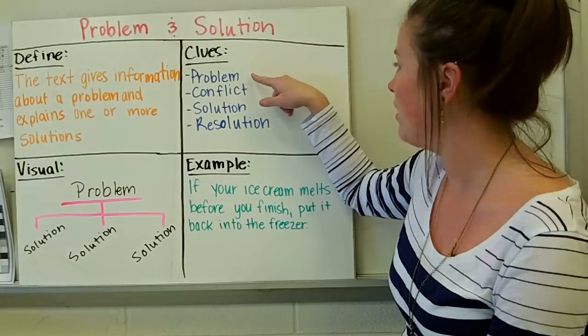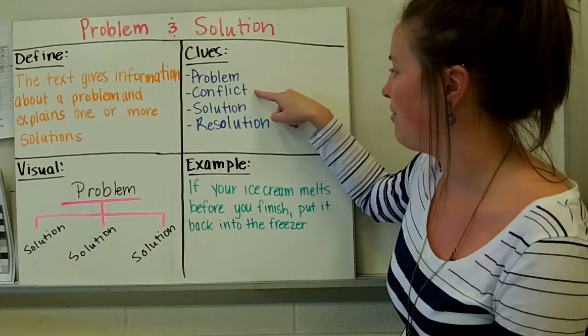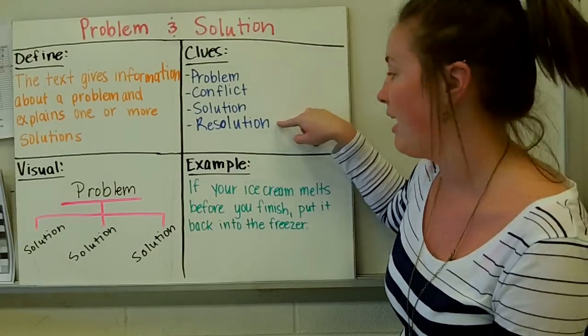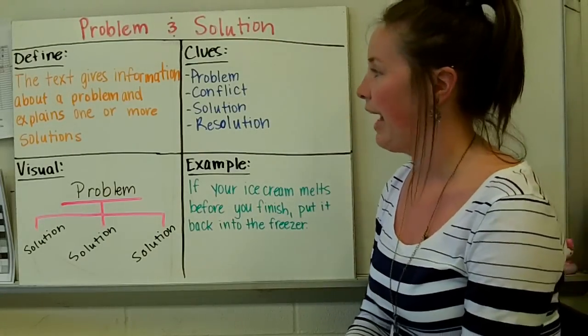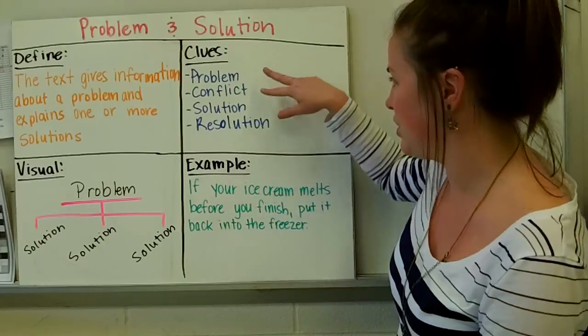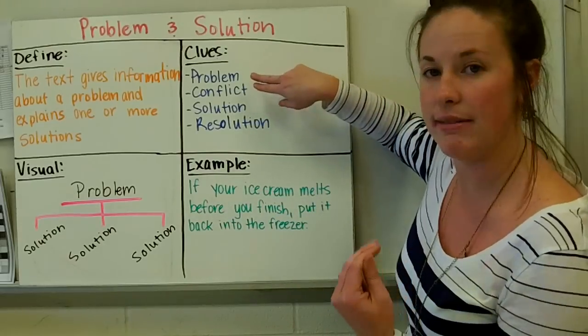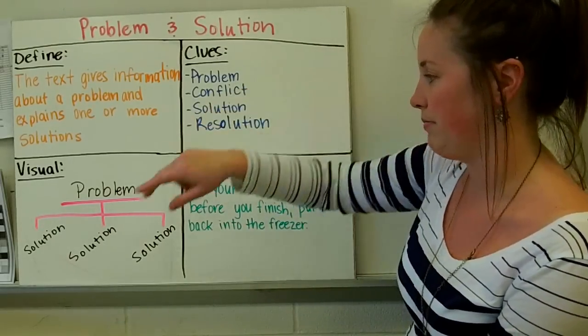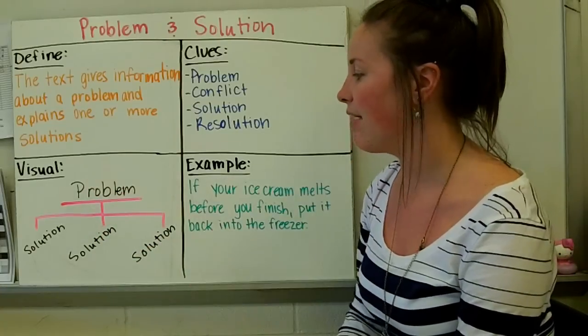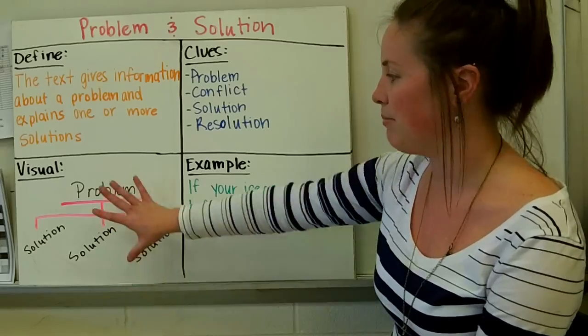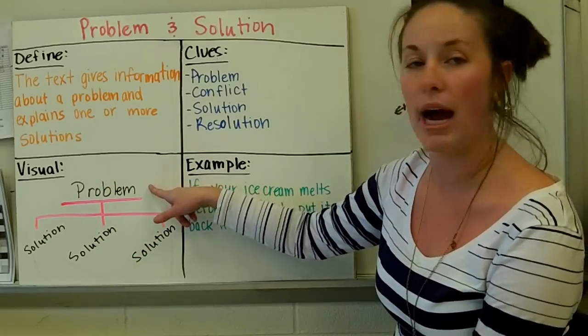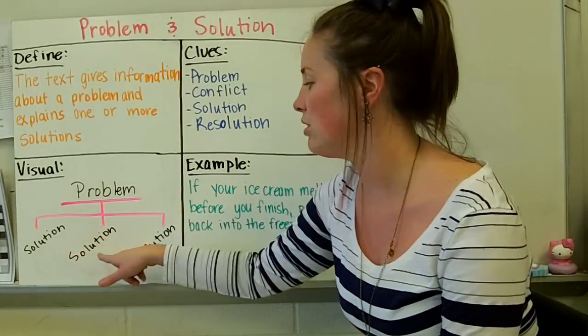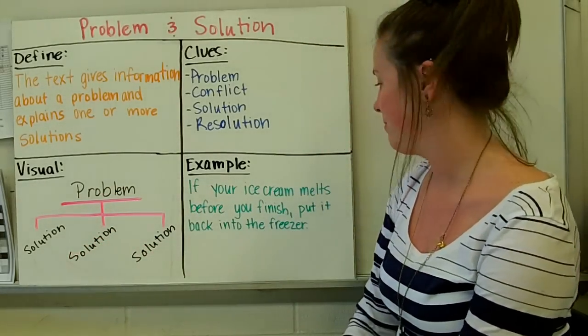Some clue words that you can look for: problem, conflict, solution, and resolution. And we all know that these two, problem and conflict, are synonyms for each other, along with solution and resolution. Next we have our visual. You could use just a simple graphic organizer, list your problem at the top, and possible solutions down at the bottom.